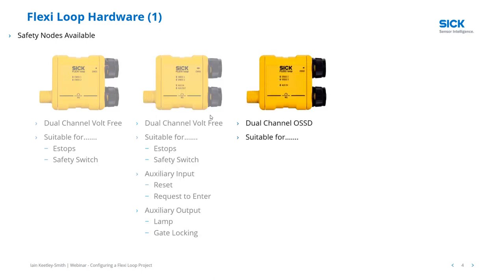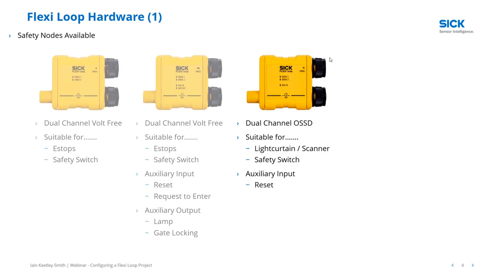We have another node which is dual-channel but instead of volt-free contacts, it looks for OSSDs — semiconductor outputs from devices such as a light curtain or laser scanner. It has the 5-core cable for FlexiLoop and a 5-core cable connector going to your light curtain or scanner. It's also noted for safety switches because some modern safety switches have semiconductor outputs — for example, the SICK STR1 non-contact RFID-coded safety switch has semiconductor outputs. This node also has an auxiliary input which could be used for a local reset of a light curtain.